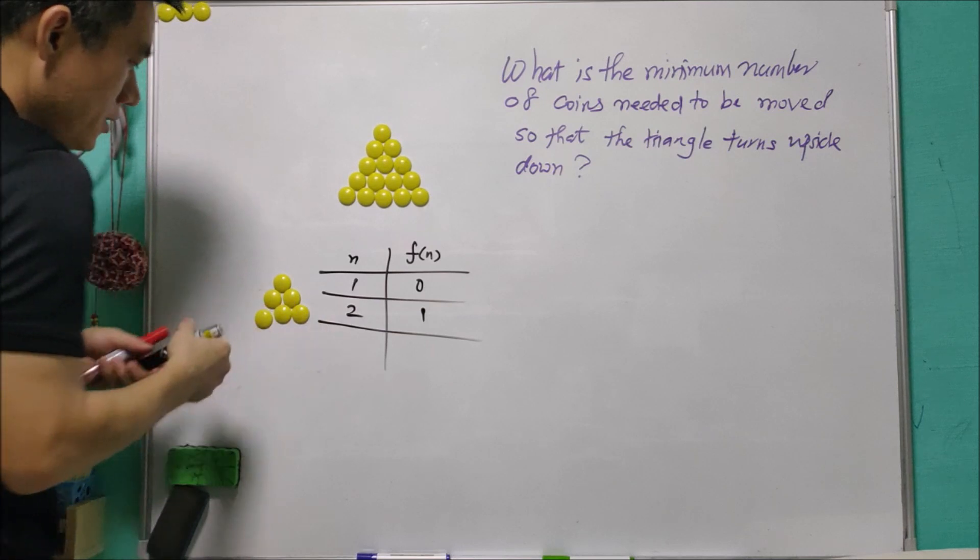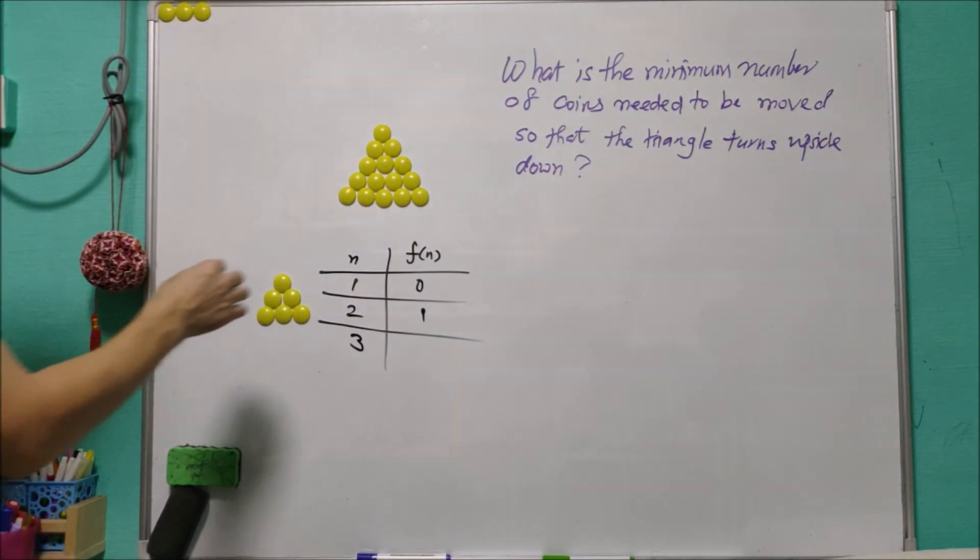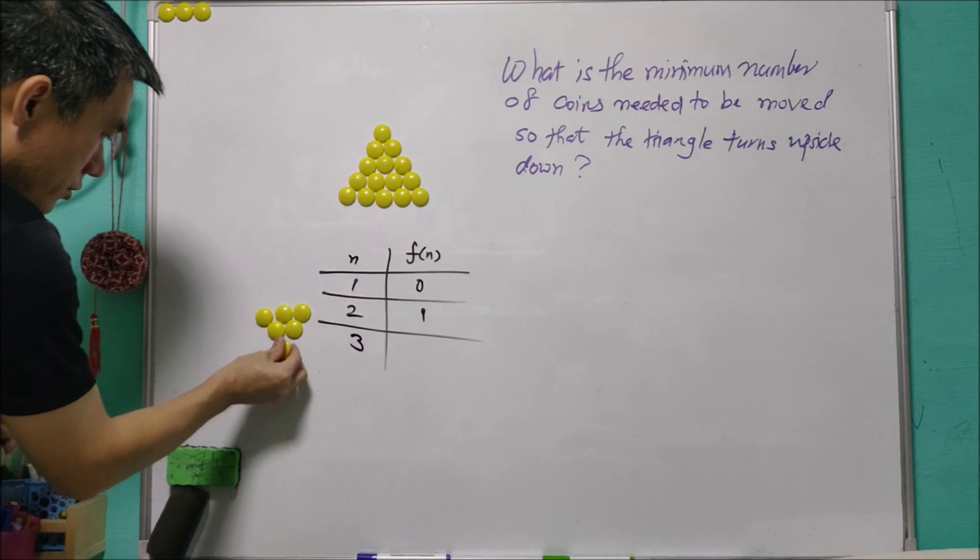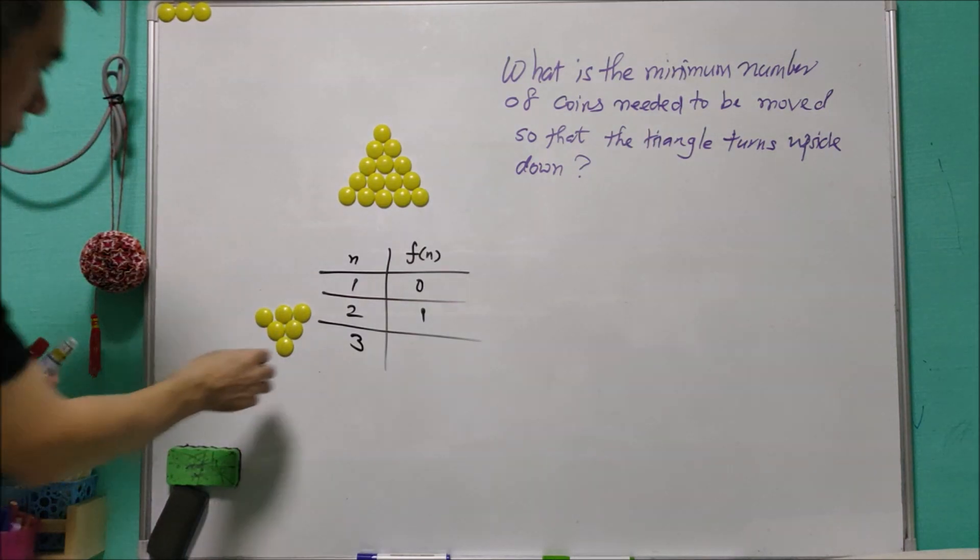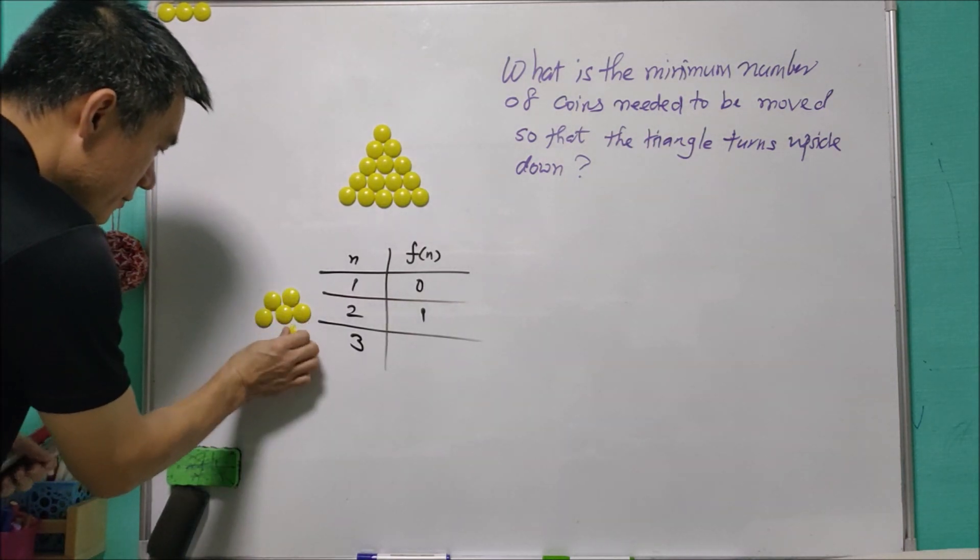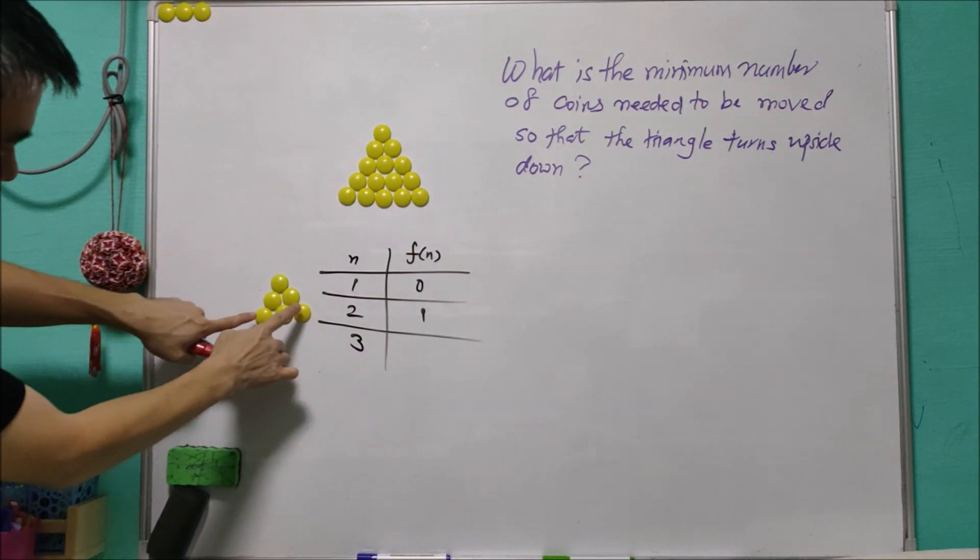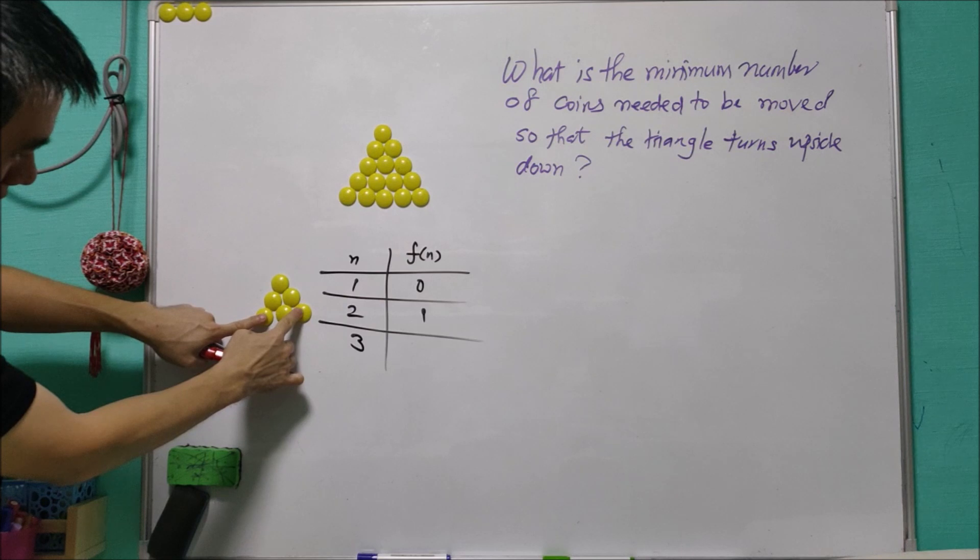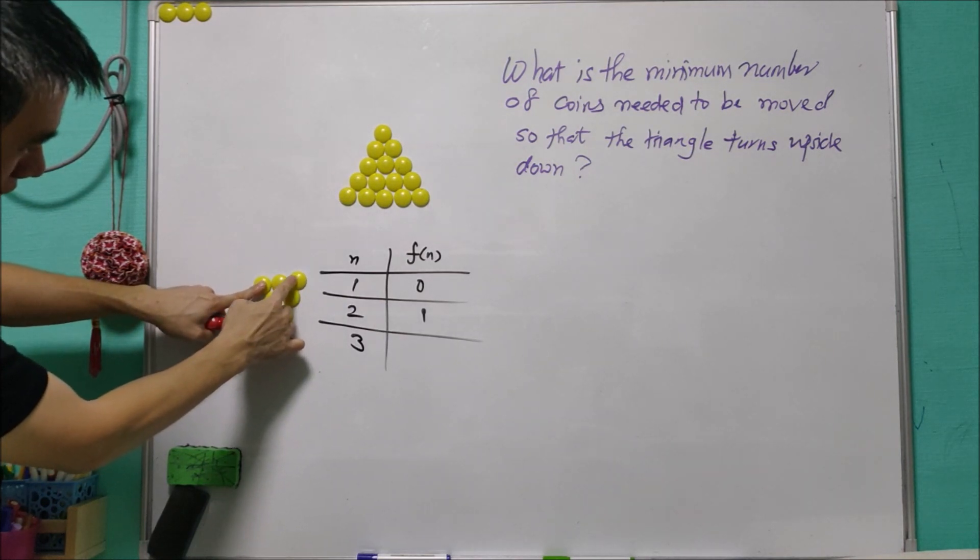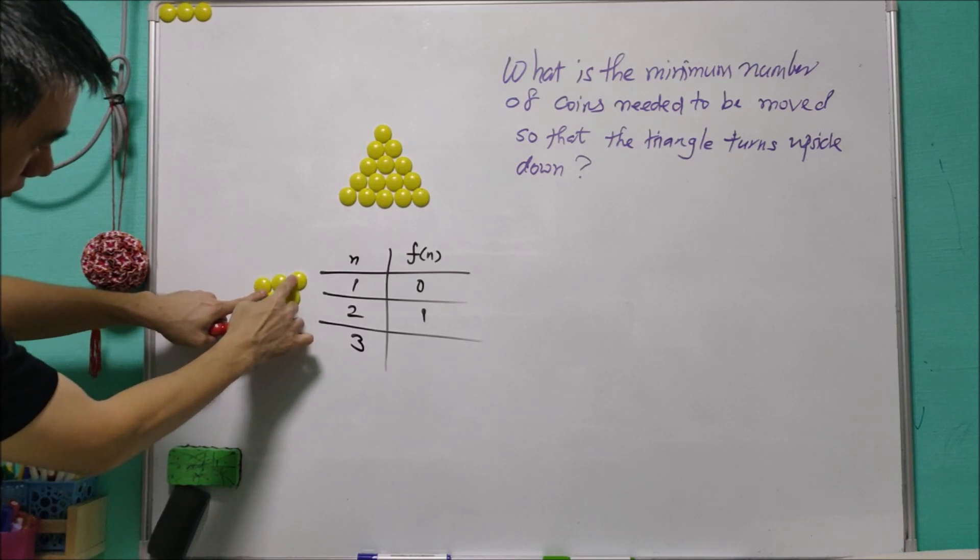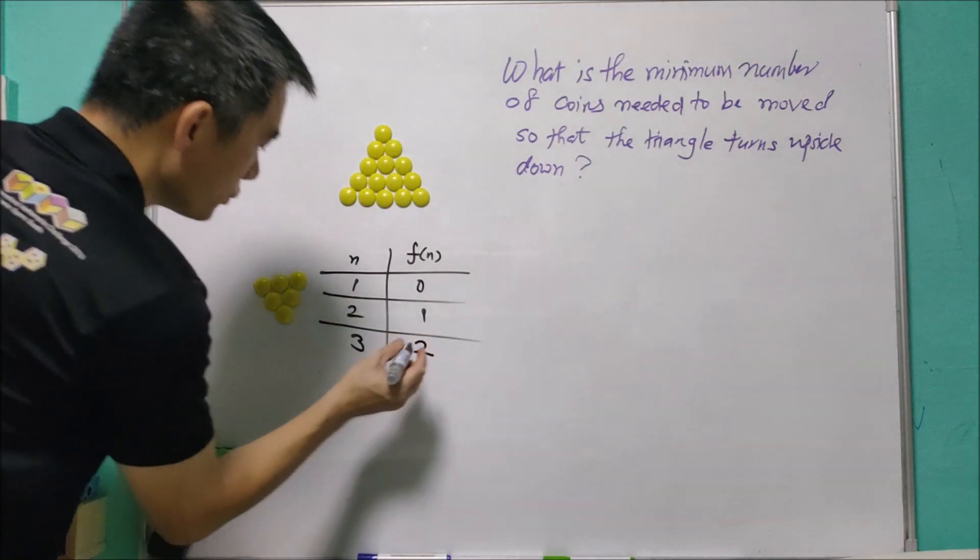When n equals 3, we may need to move one, two, three, but we can save a little bit by moving these two coins and we will have the triangle upside down. See, from here to here, so the answer is 2.